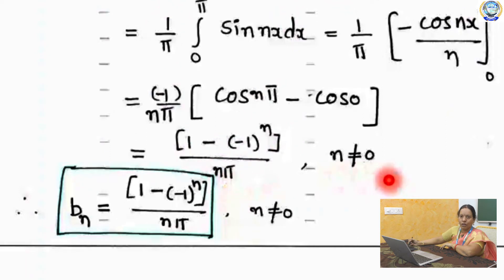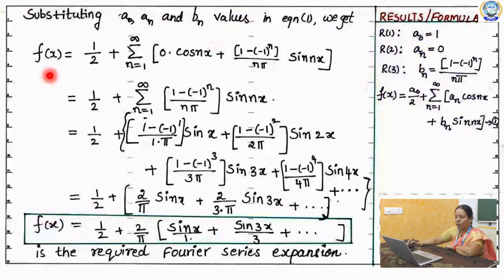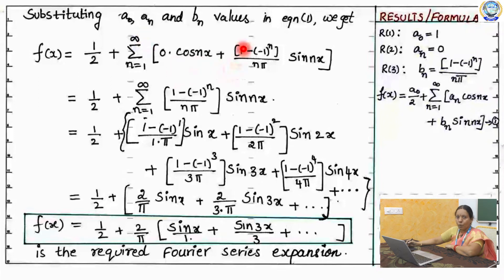So you got the values a0, a_n, and b_n. Substituting these three values in your equation 1, you got f of x equals to 1 by 2 plus sigma n equals to 1 to infinity, 0 cos nx plus (1 minus (minus 1)^n) by n pi, sin nx.